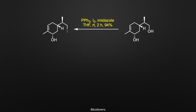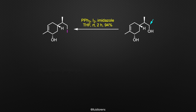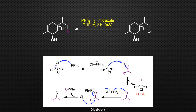In the next step, the diol was treated with triphenylphosphine, imidazole, and iodide to give the desired alkyl iodide in 94% yield. In this Appel reaction, only the primary alcohol underwent nucleophilic substitution, leaving the secondary alcohol untouched. In classical conditions, the Appel reaction allows the conversion of an alcohol into the corresponding alkyl chloride under mild conditions by the reaction of triphenylphosphine and tetrachloromethane with the alcohol.